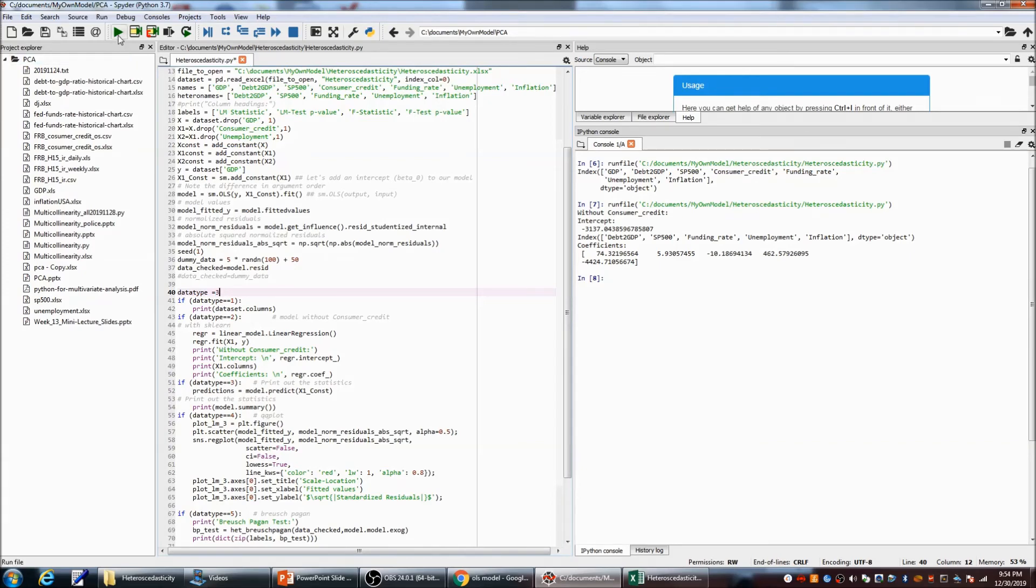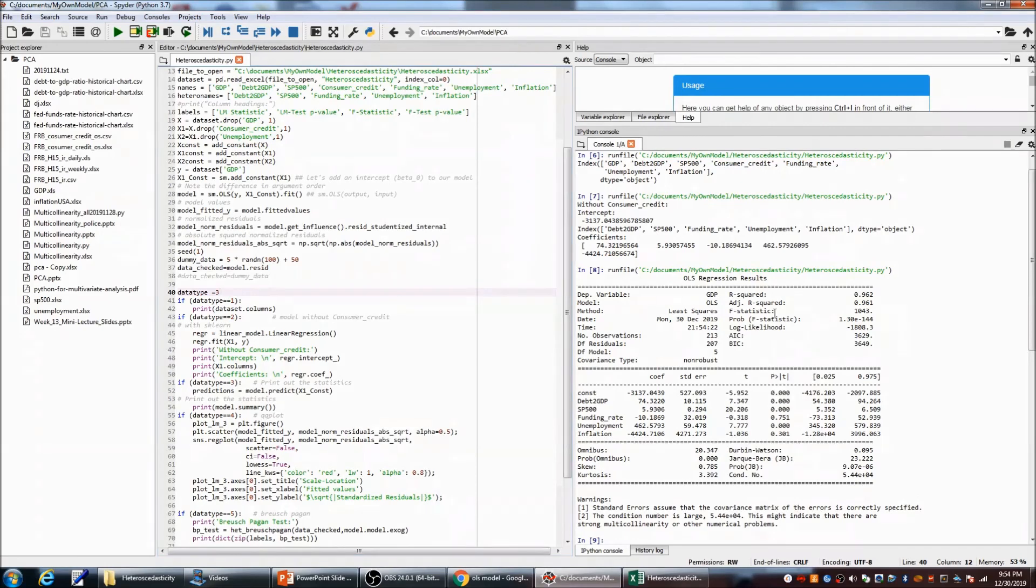And let me show you the summary of this model. It has R squared 96.2% and adjusted R squared 96.1%. And now, we want to check heteroscedasticity for these residuals of the model.